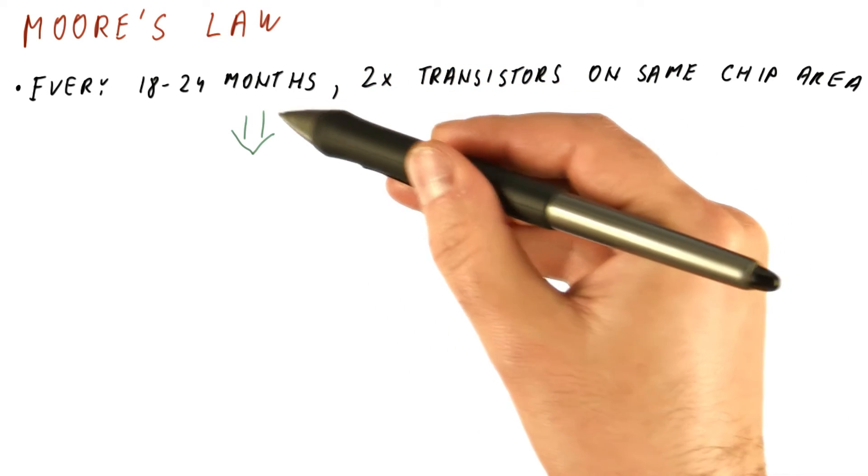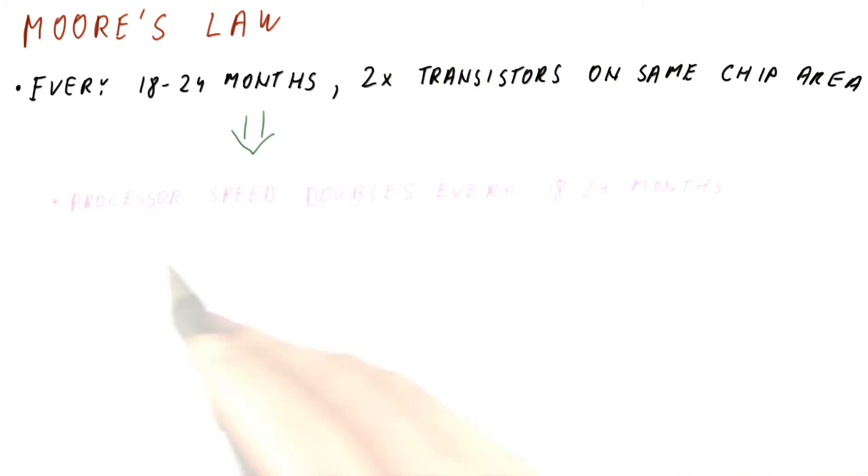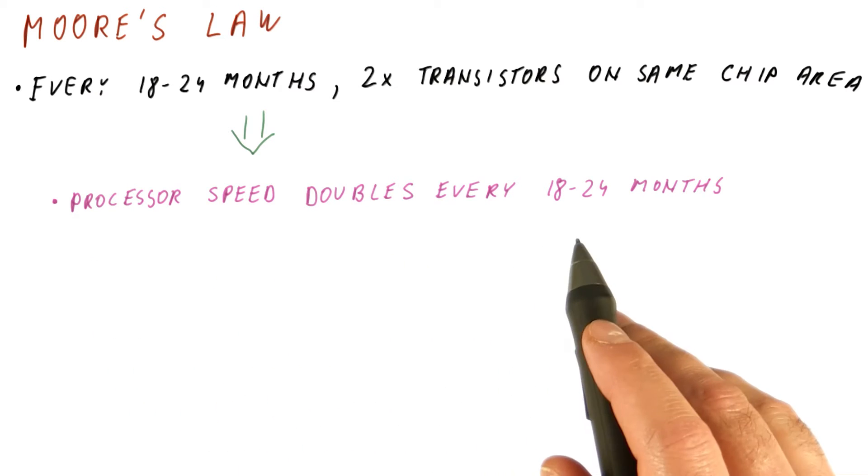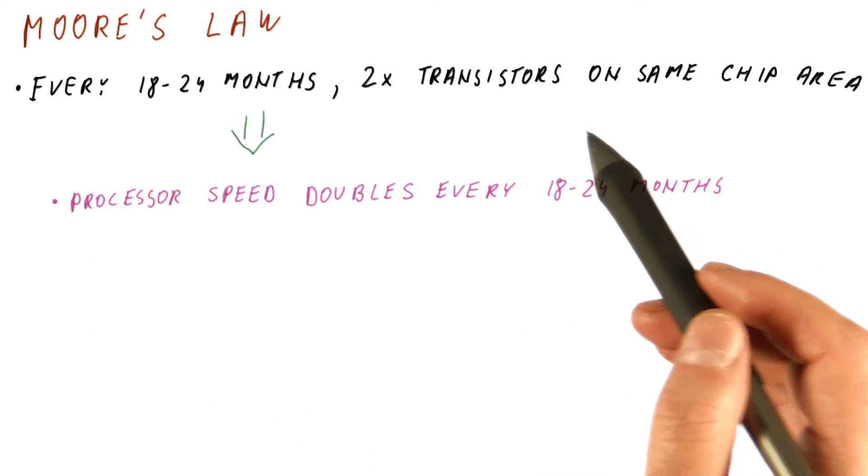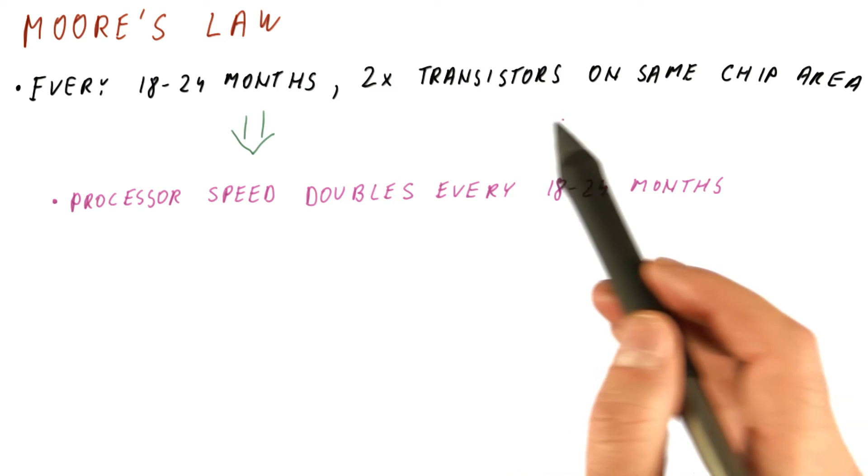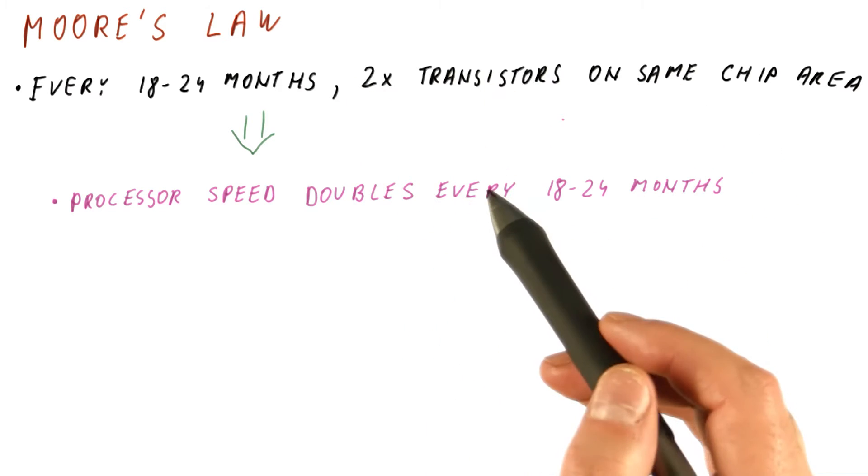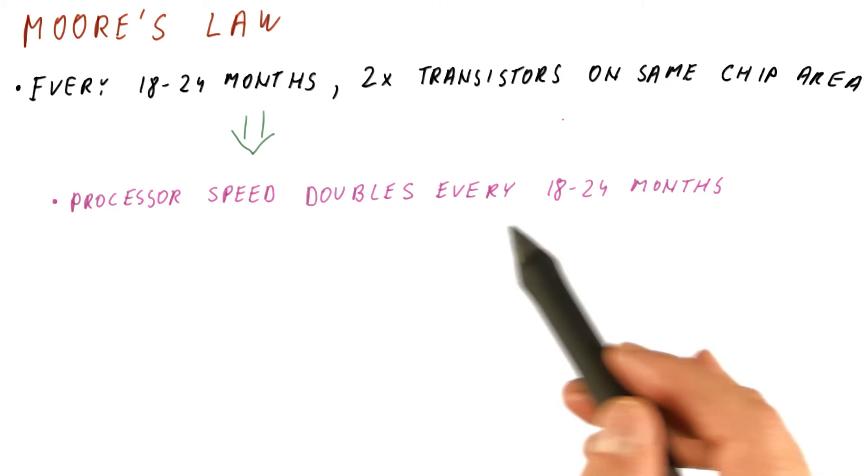As computer architects, we try to translate that into doubling the processor speed every 18 to 24 months. So what we try to do is, if the technology can give us twice as many transistors, we try to translate that into doubling the processor speed.